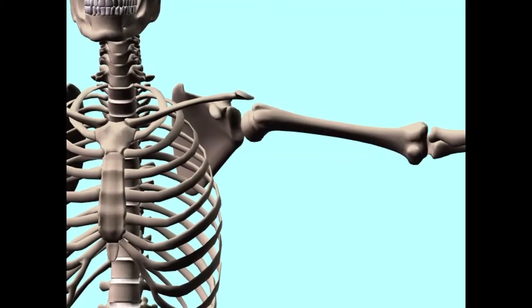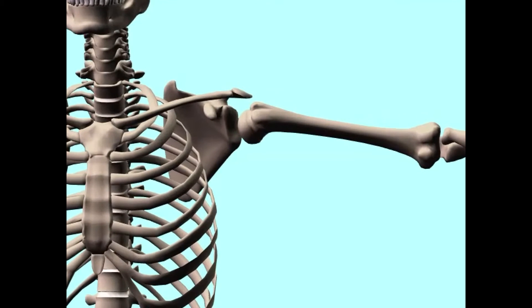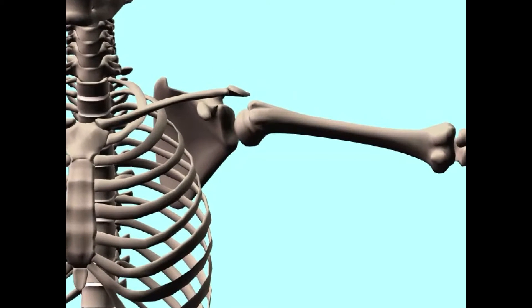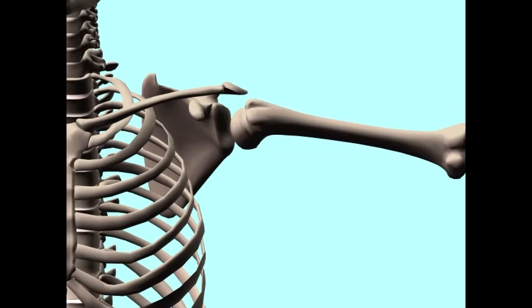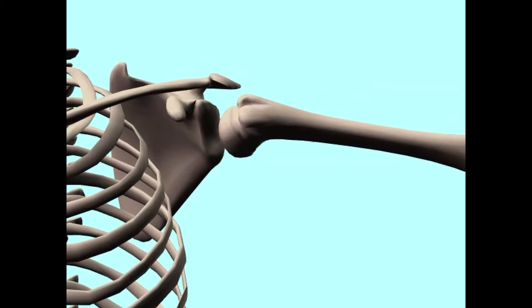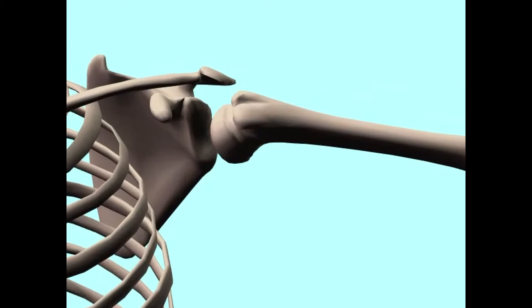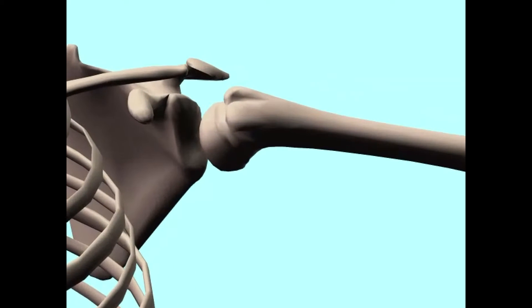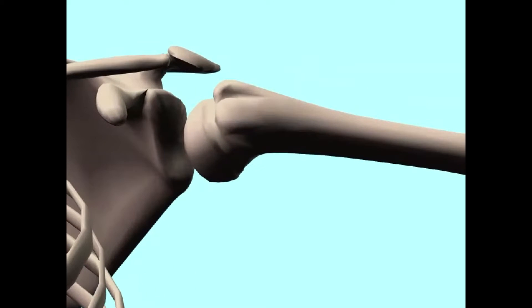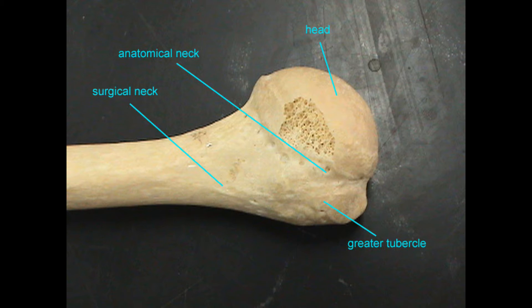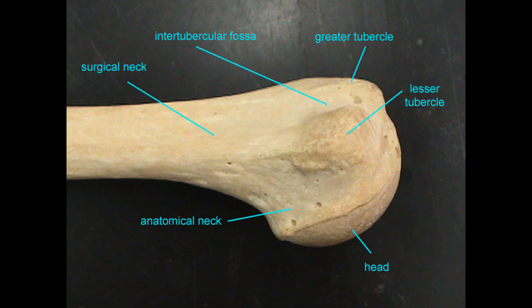The proximal end of the humerus forms the prominent head, the ball of the ball and socket joint found in the shoulder. Distal to this is the anatomical neck, and where the humerus narrows, the surgical neck, so-called because fractures often occur here.